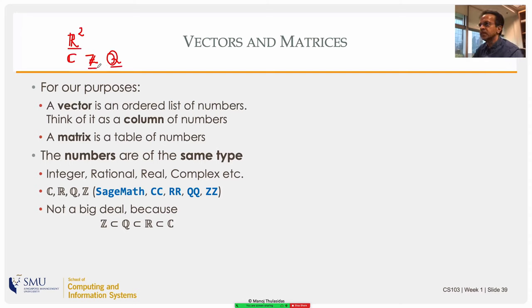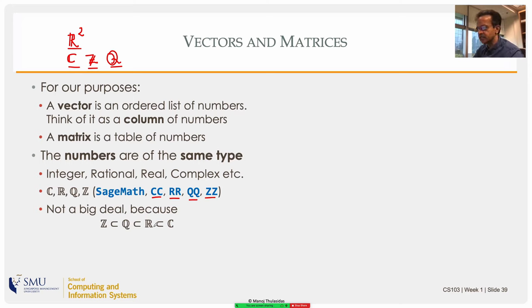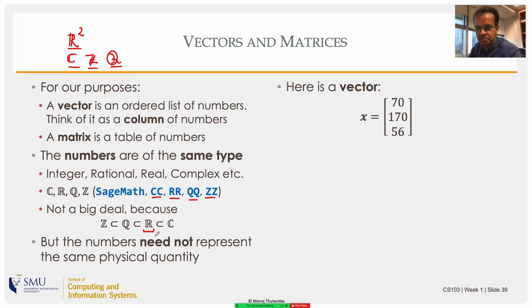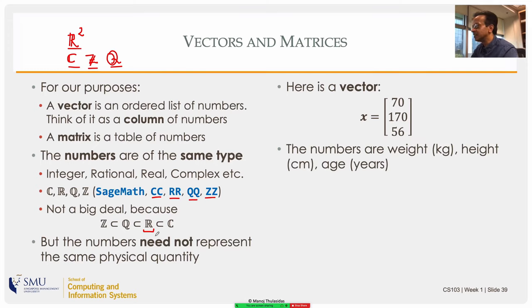A vector is an ordered set of numbers — a column of numbers. A matrix is a table of numbers; the numbers can be integers, rationals, reals, or complex. In our case we are almost always interested in real numbers. In SageMath, the set of complex numbers is called CC, the field of real numbers RR, rationals QQ, and integers ZZ. Integers are a subset of rationals, which are a subset of reals, which are a subset of complex numbers. We will deal with real numbers 99% of the time.